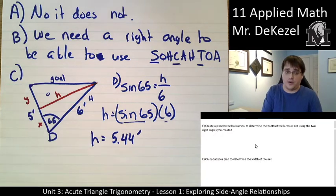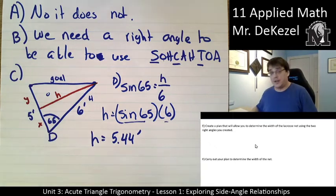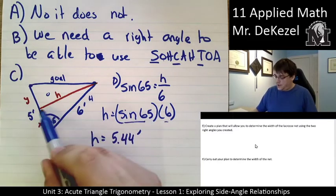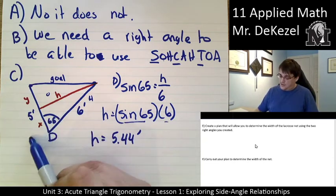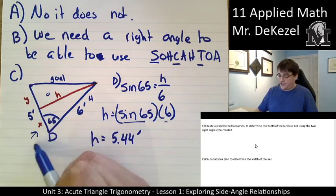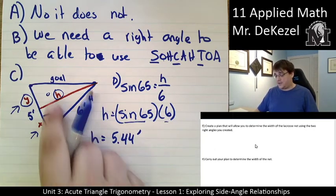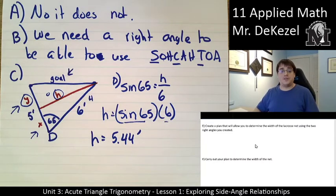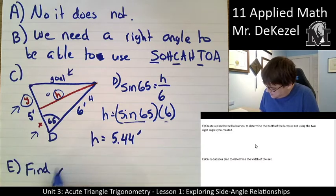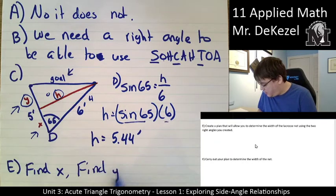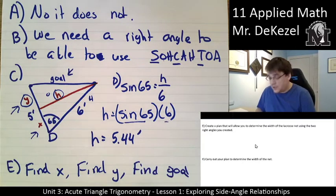Next, we want to find the width of the net — the length of the goal. We need to create a plan. Using the triangle with the 65-degree angle, I can find X using cosine. From the known length of 5 feet, I can subtract X to find Y. Then I have Y and the height H, so I can use the Pythagorean theorem to find the goal. Part E — our plan: find X, then find Y, then use Pythagorean theorem to find the goal.